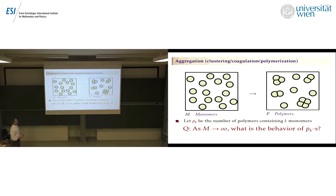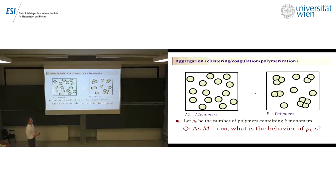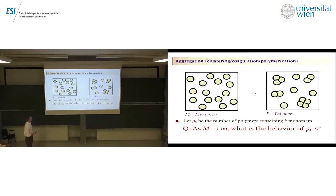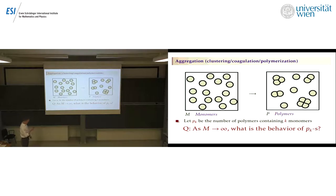Generally speaking, it's an aggregation process — an abstract formulation — and you can, under various guises, call it clustering, coagulation, polymerization. I personally use the language of polymers. The idea is that you have a bunch of monomers and then they somehow stick together and you get a bunch of polymers. The question is, as m, the number of monomers, tends to infinity, can we get some sort of behavior of the number of polymers?